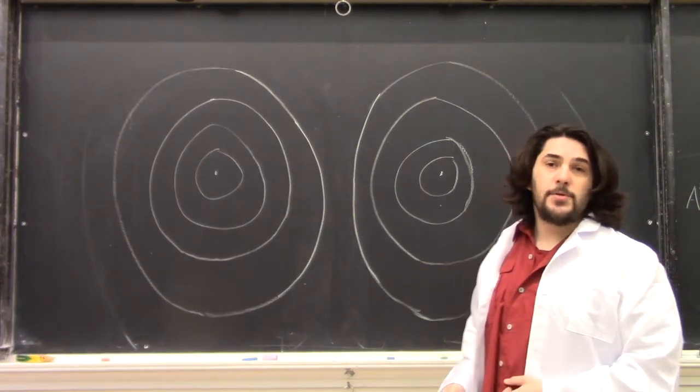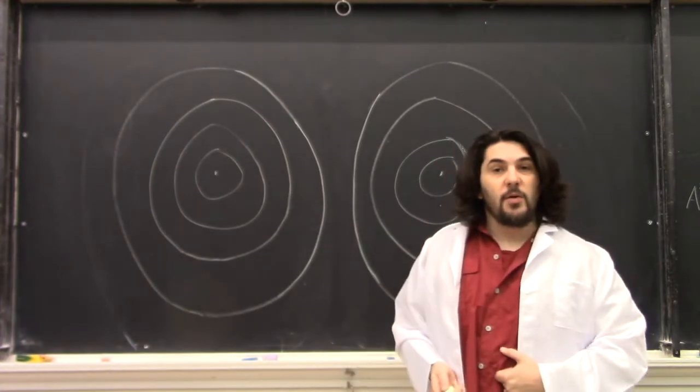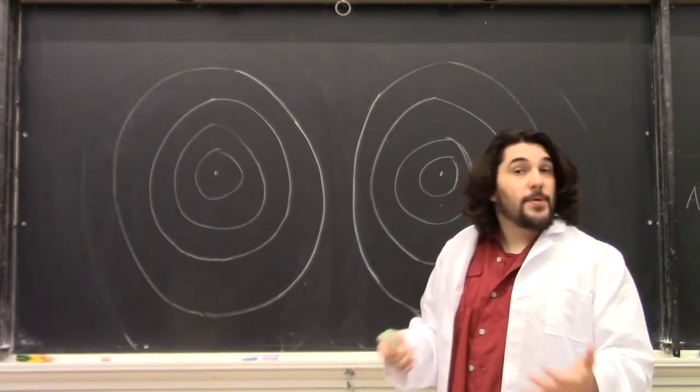Let's say you have two different point sources of waves, generating waves on some surface, like ripples on water.